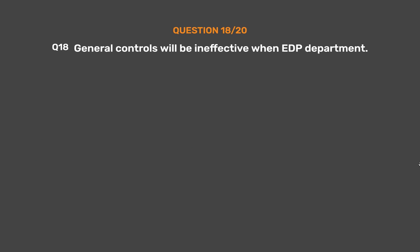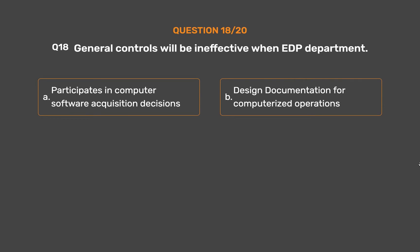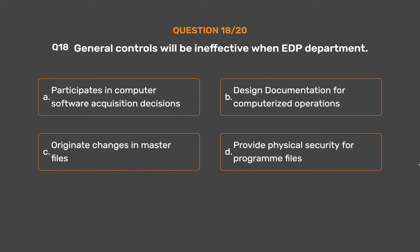Question number 18. General controls will be ineffective when the EDP department: Option A: Participates in computer software acquisition decisions. Option B: Designs documentation for computerized operations. Option C: Originates changes in master files. Option D: Provides physical security for program files. The correct answer is Option C — Originate changes in master files.